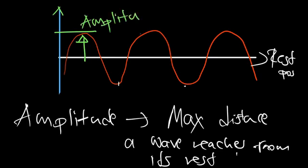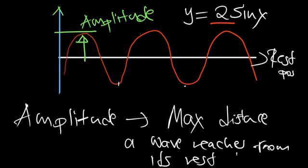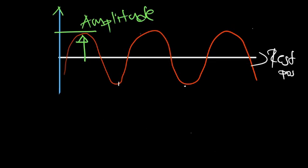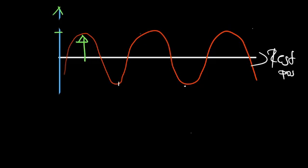Amplitude is especially useful in trigonometry. For example, in the equation y = 2sin(x), the 2 is the amplitude — it's the maximum point of the wave. So the amplitude is the maximum distance the wave reaches from its rest position. The wavelength can be measured as the distance between two consecutive crests or the distance between two consecutive troughs.